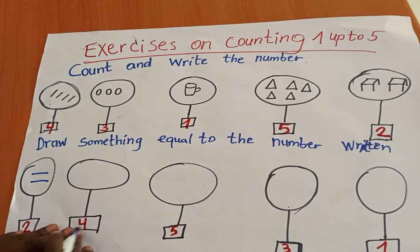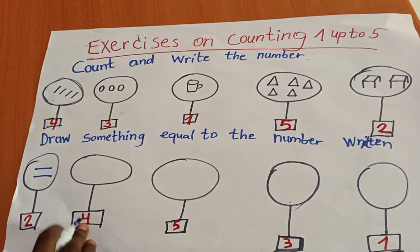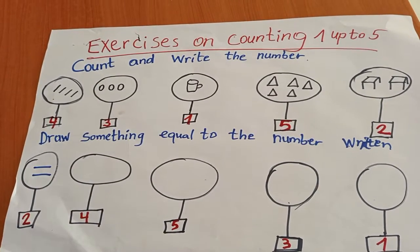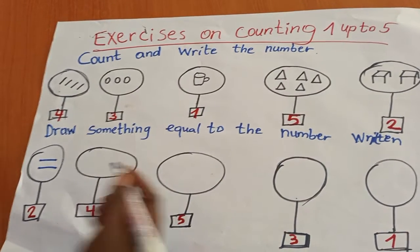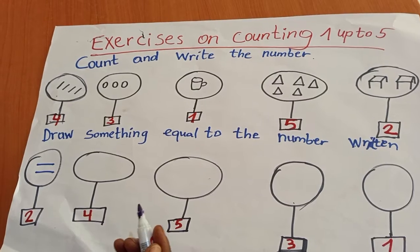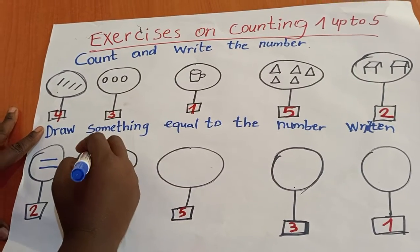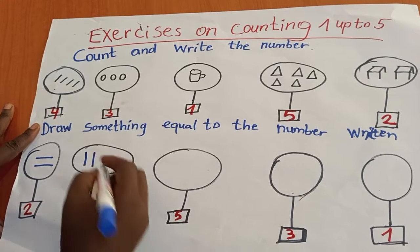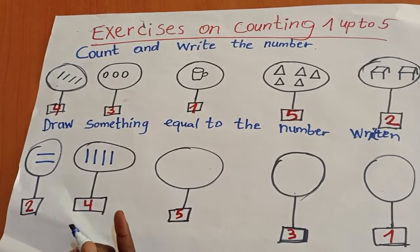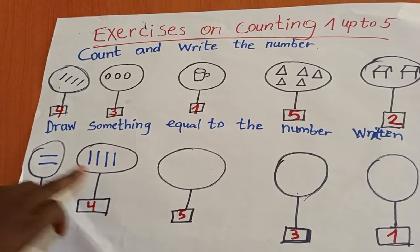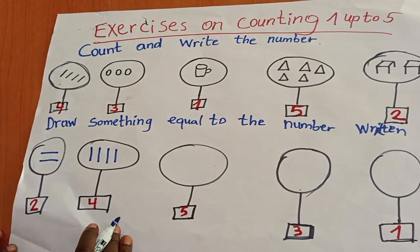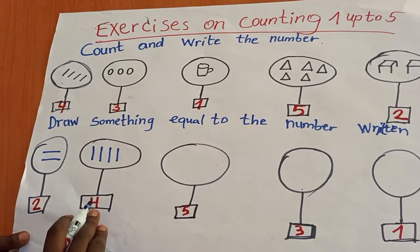Here we have the number four. I'm going to draw something equal to number four. For example, I can draw vertical lines. One, two, three, four. Here I have one, two, three, four — four vertical lines equal to number four.